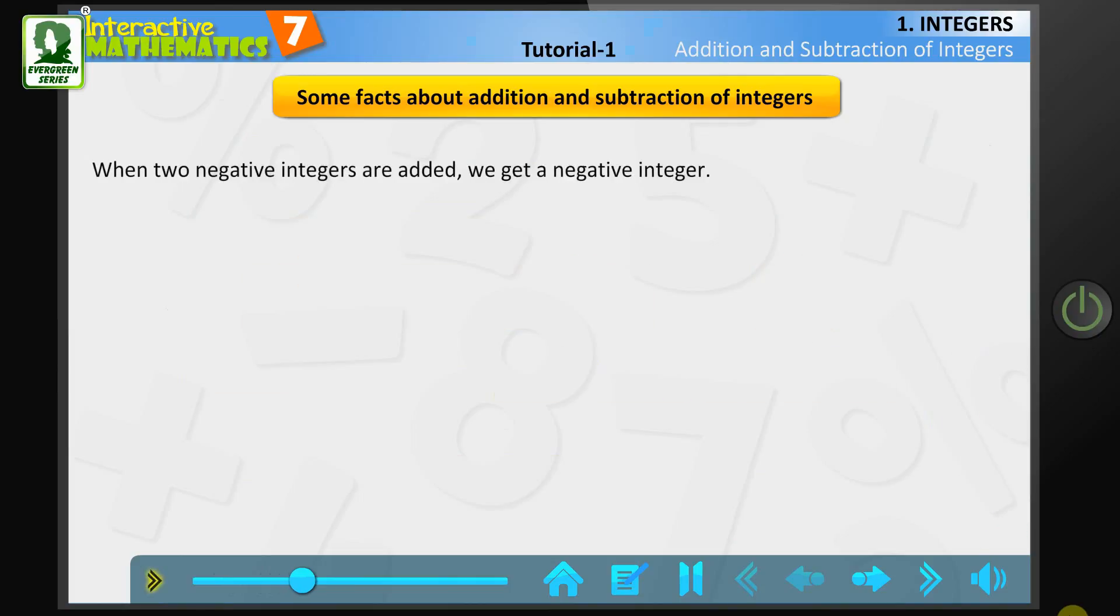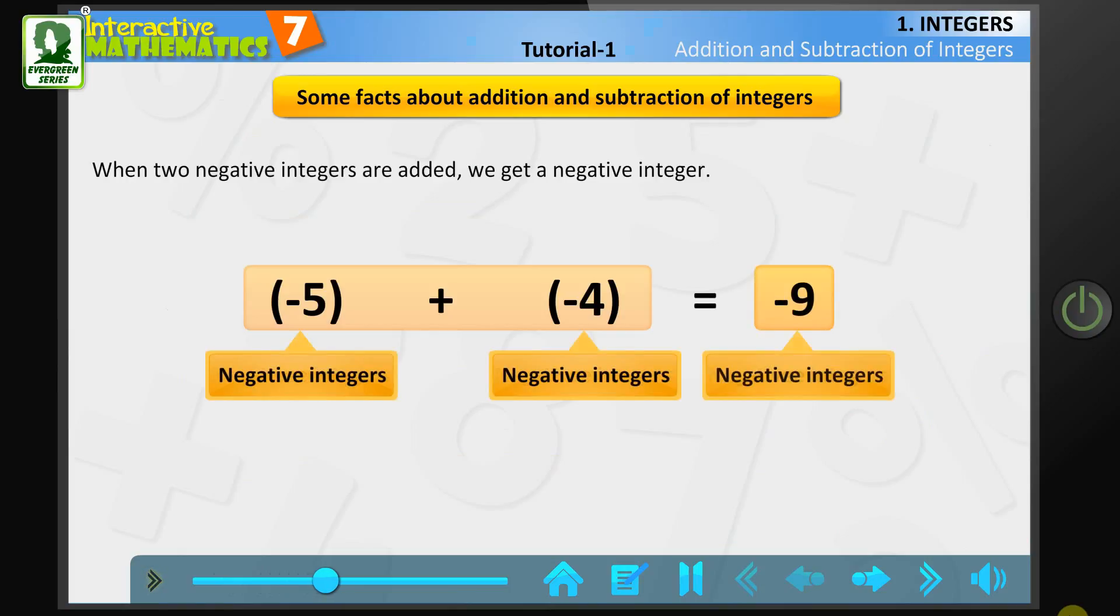When two negative integers are added, we get a negative integer. For example, the sum of -5 and -4 is -9. The sum of two negative integers is a negative integer.